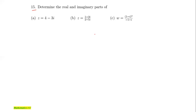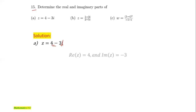We have the complex number equal to 4 minus 3i. Generally, for a complex number written in the form a + ib, the number written without any i is simply the real part, and the number combined with i is the imaginary part. So for 4 minus 3i, the real part is 4 and the imaginary part is minus 3.